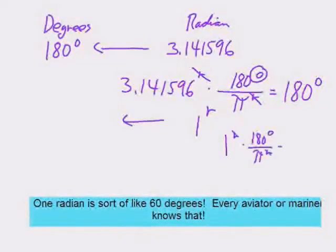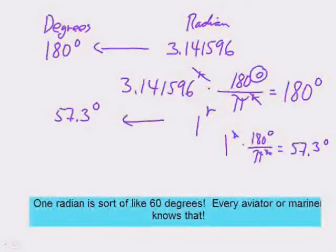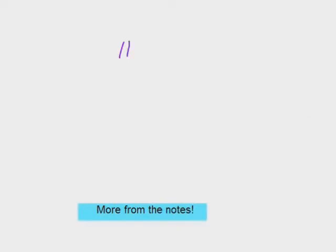Here's more from our worksheet. Remember that a radian is about 57.3°, so about 60°. If you want to picture what one radian looks like, 60° is pretty close. That's what they teach you when you're sailing or flying — there are lots of angles when you're sailing and flying.